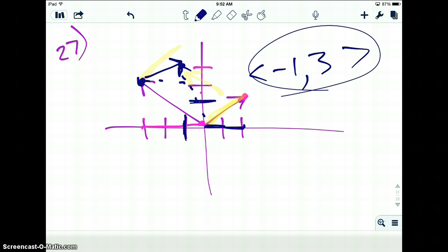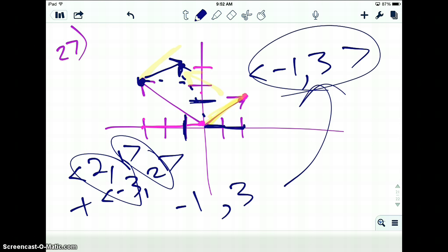And you can even get this without even graphing. 2, 1, plus negative 3, 2. I would just add the x's together and get negative 1. Add the y's together and get 3. So of course you guys are probably just going to go ahead and try and do it by not even graphing. But if you look at 30 through 35, those are graphed. So you're going to have to come up with the ordered pairs first then, and then find the sum, and then you can get the resultant vector.